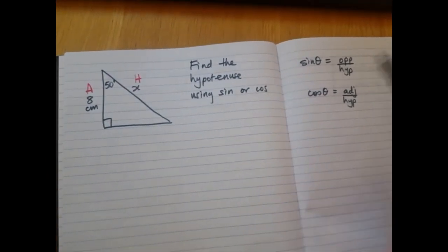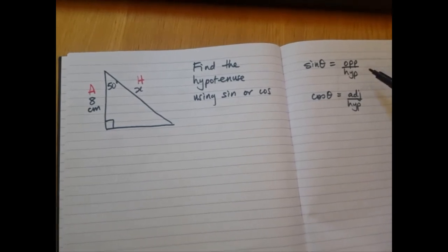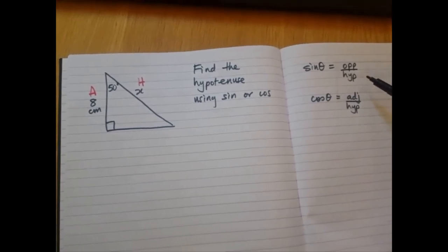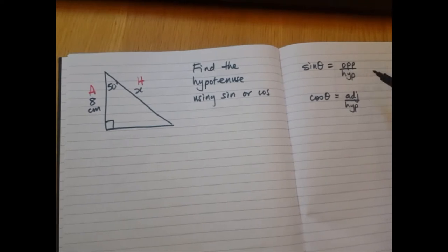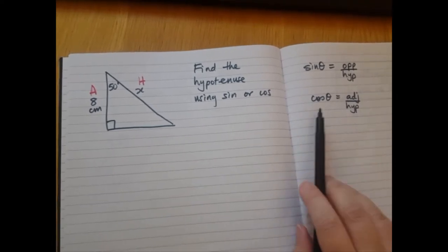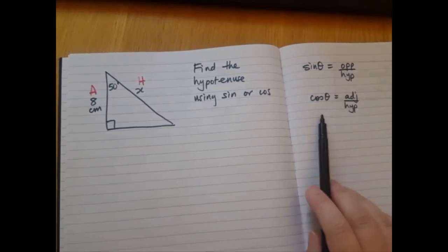Look at our formulas now. Which one of these uses the adjacent and the hypotenuse? It's going to be cos. You see here, adjacent, hypotenuse.